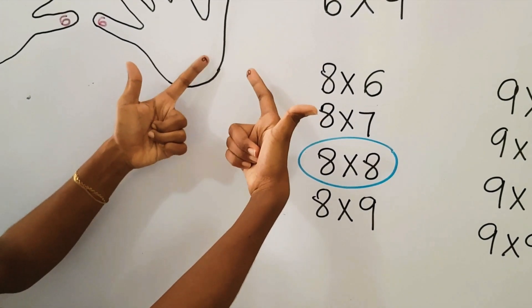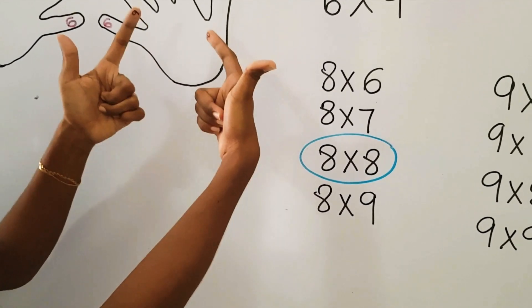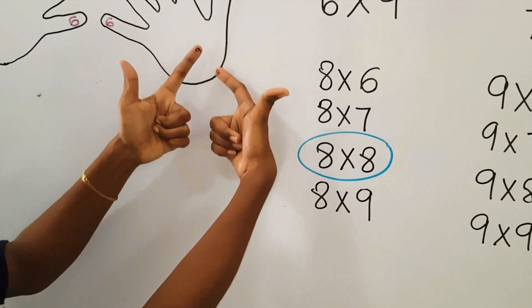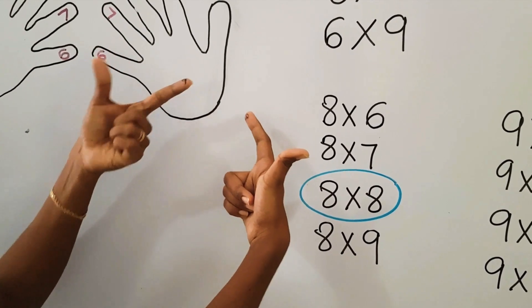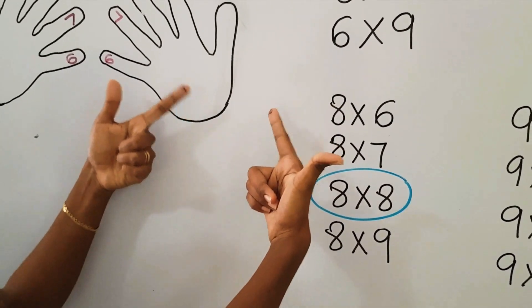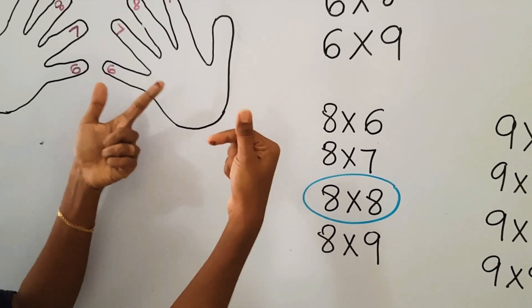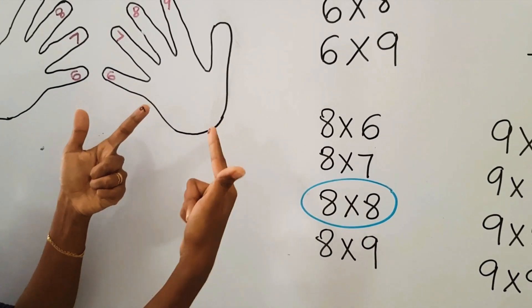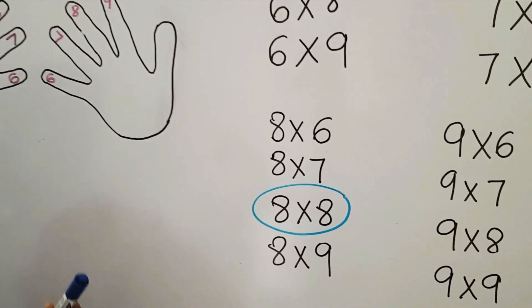So how many fingers have we folded? We have folded 6 fingers. Each finger carries ten, so that means we have folded 60. Now the balance, we have 2 on top and 2 on the other hand. We have to multiply these two. 2×2 will give us 4, so 60 plus 4 will give us 64.